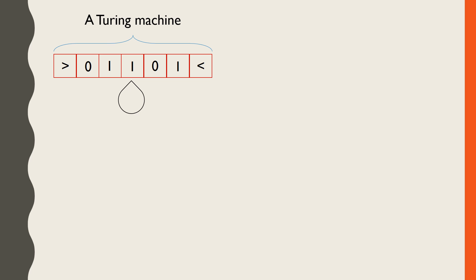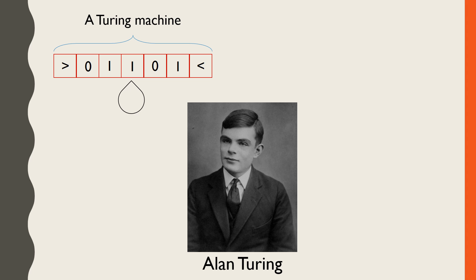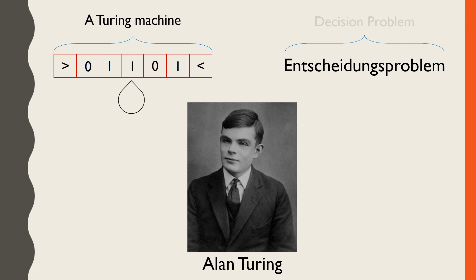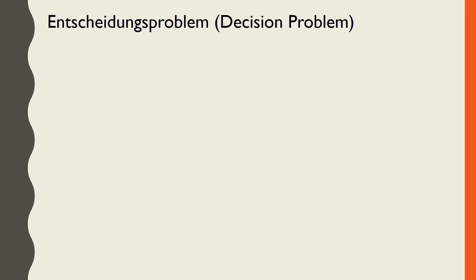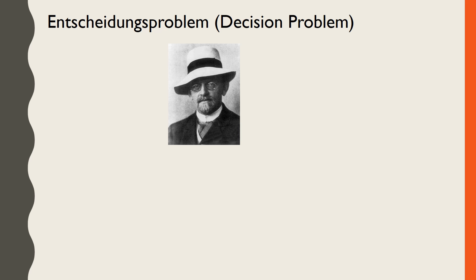They were developed by Alan Turing in 1936, while he was working on the Entscheidungsproblem, or decision problem. The decision problem is fundamental to logic. After having been around for some time, the problem was formalized by David Hilbert in 1928. The decision problem is concerned with the validity of propositions.